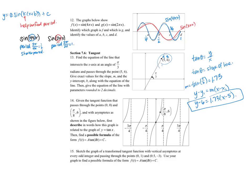Number 14, given the tangent function that passes through the point 0, 0 and pi over 8, 6 with asymptotes as shown. So I want to find a possible formula of this form. What I can see first of all is that the midline of this tangent function is the x-axis, so that means that c equals 0. In other words, I just have f of t is equal to a tangent of bt.